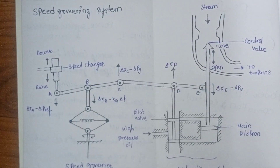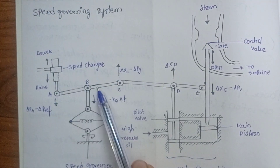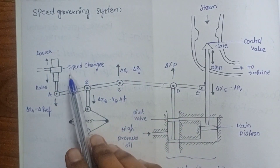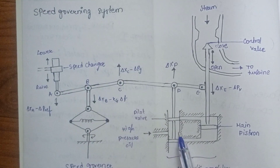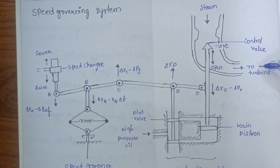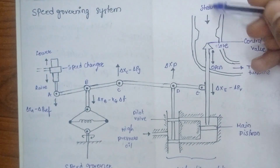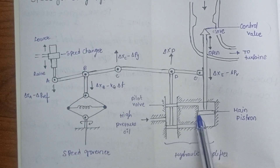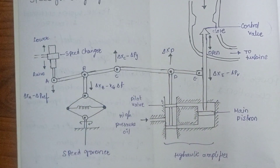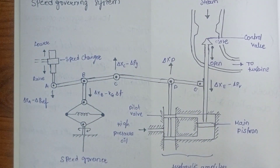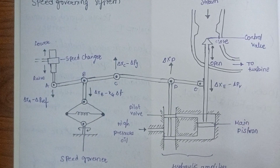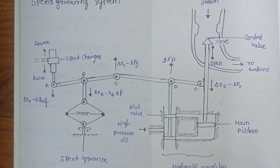This is the diagram of the speed governing system. Here we have points A, B, C, D, and E — these are the reference points given to the governing system. We have the speed changer, high pressure oil, and the control valve connected to the turbine. There is a steam output, hydraulic amplifiers, and a piston which is the power output of the system. These are the main parts: speed changer, speed governor, hydraulic amplifier, and control valve — all connected by a linkage mechanism.